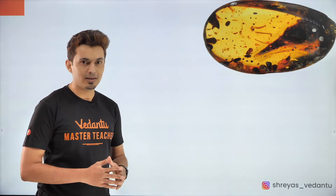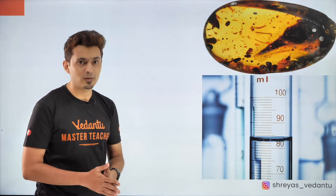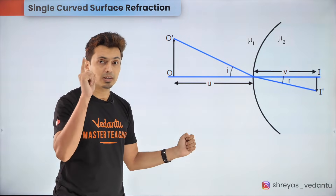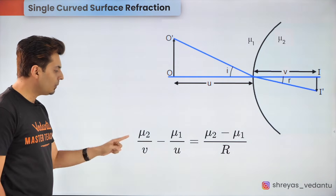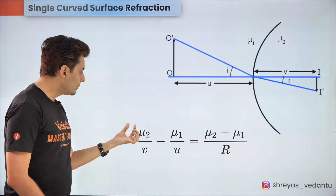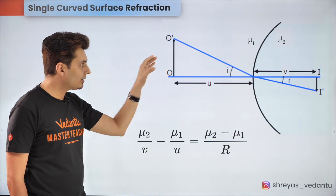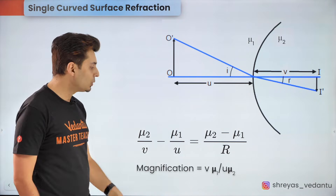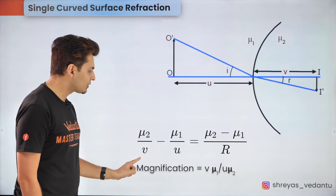Now let's talk about refraction on curved surfaces — examples include a fossil preserved in amber glass, watching through the meniscus of a fluid, or tiny objects inside a transparent paperweight. For every curved surface refraction, Snell's law is obeyed at every point. The mathematical formula for locating the image is: μ₂/v − μ₁/u = (μ₂ − μ₁)/R, where R is the radius of curvature and μ₁, μ₂ are the refractive indices of the media of the incident and refracted rays respectively. The magnification is given by image height/object height = Vμ₁/(Uμ₂), which can be remembered by a crossover pattern: Vμ₁ and Uμ₂.